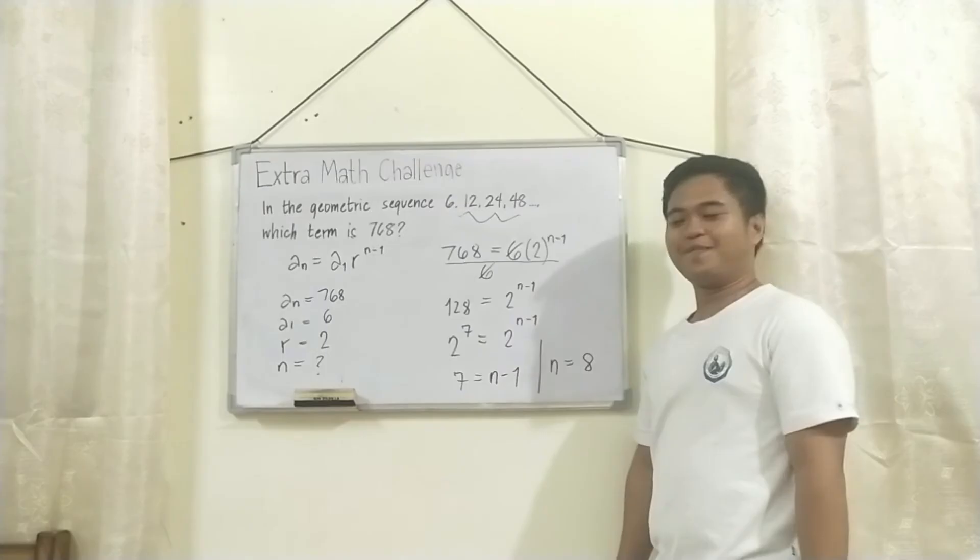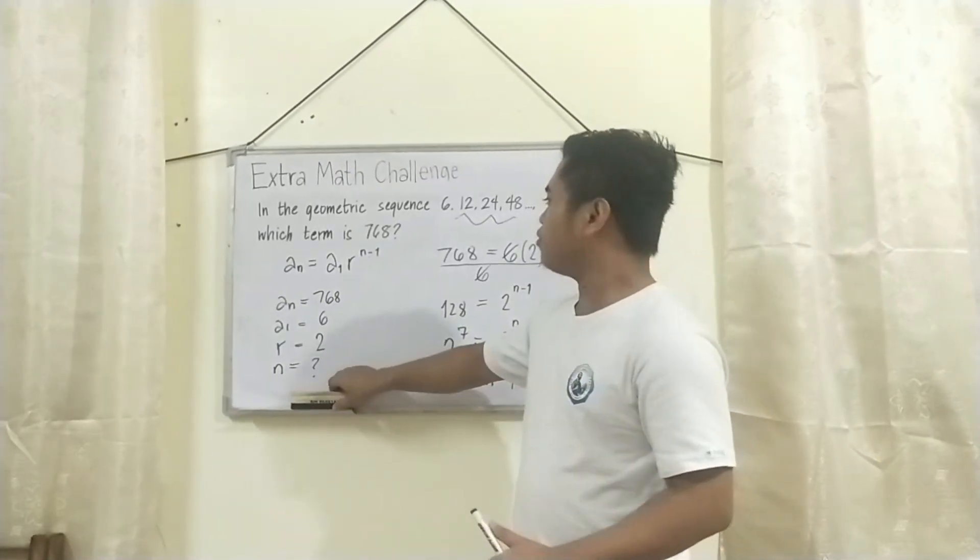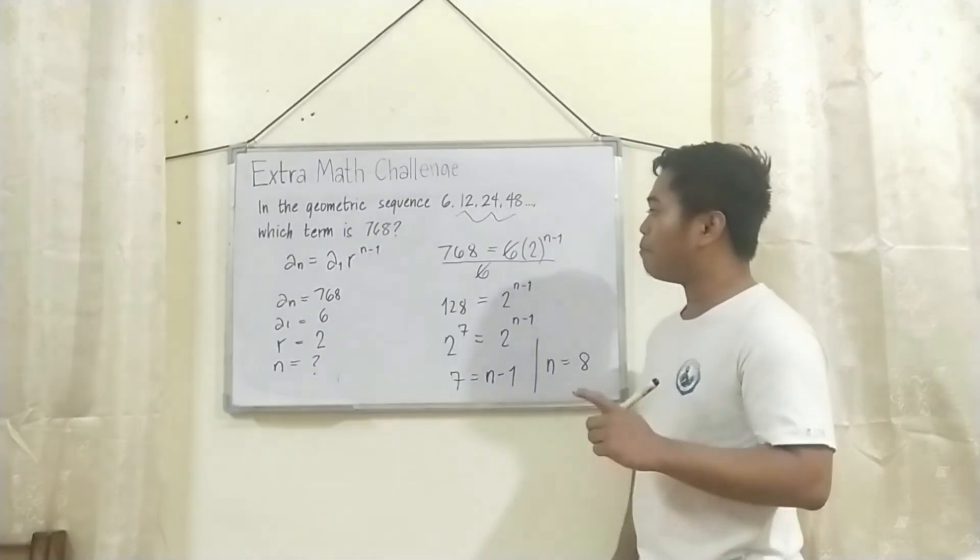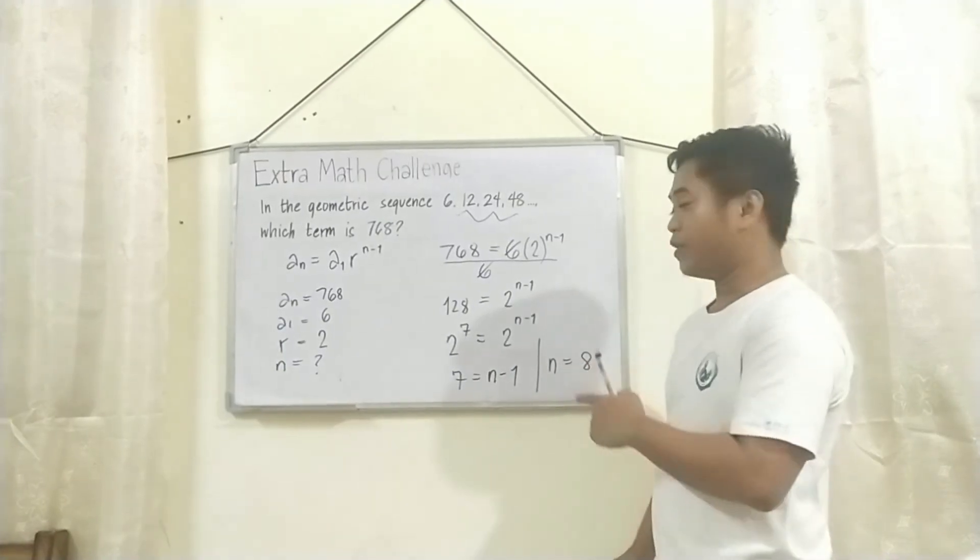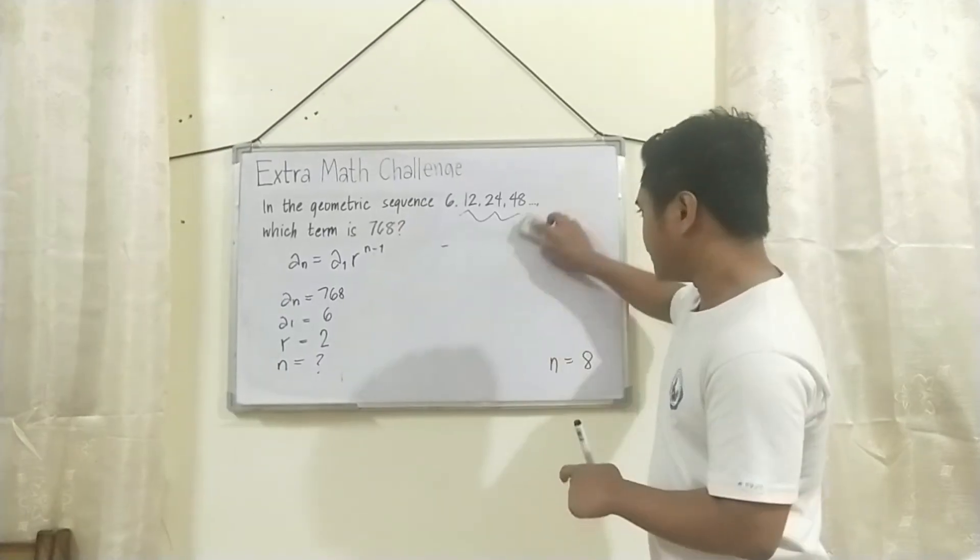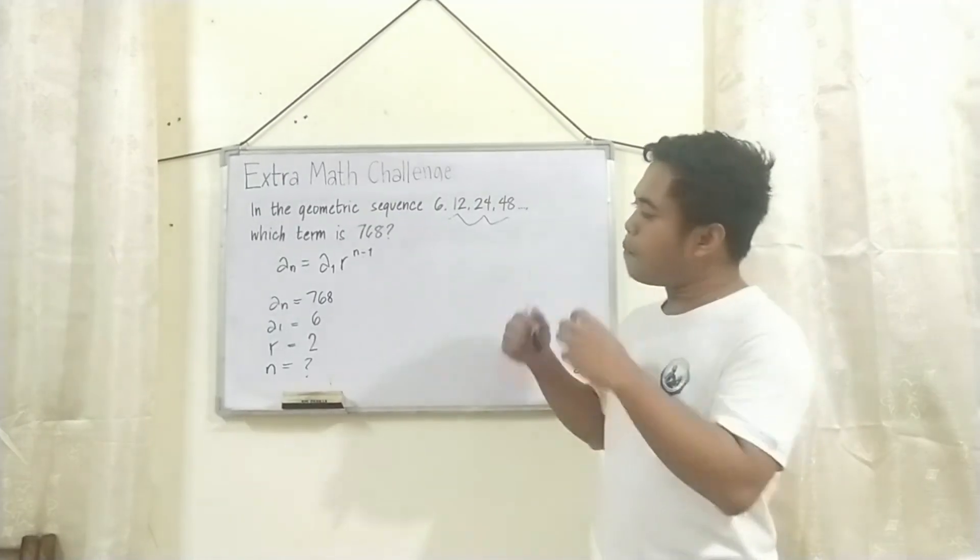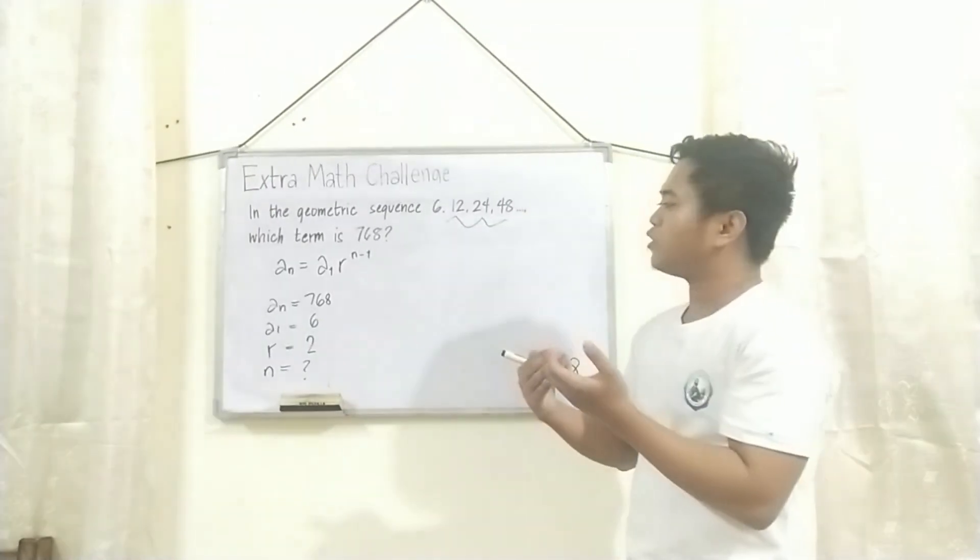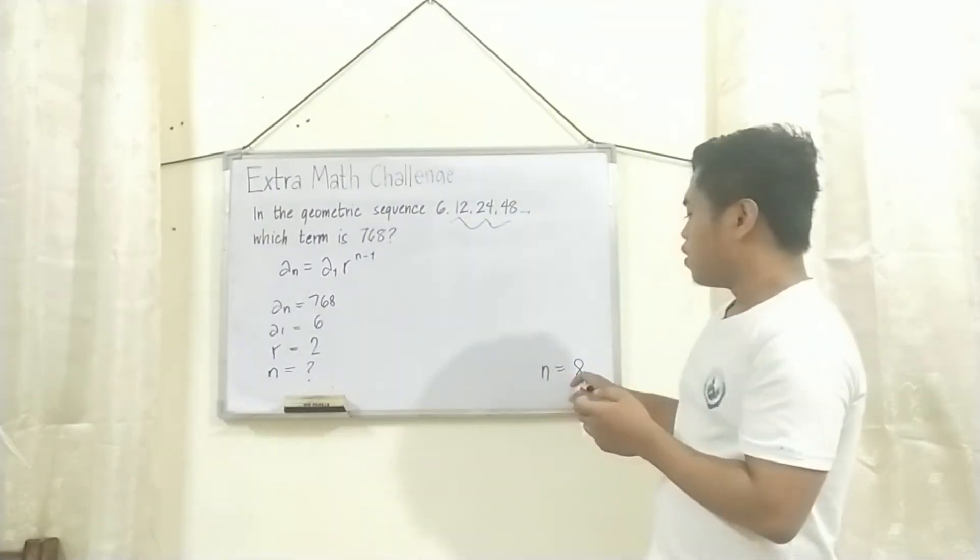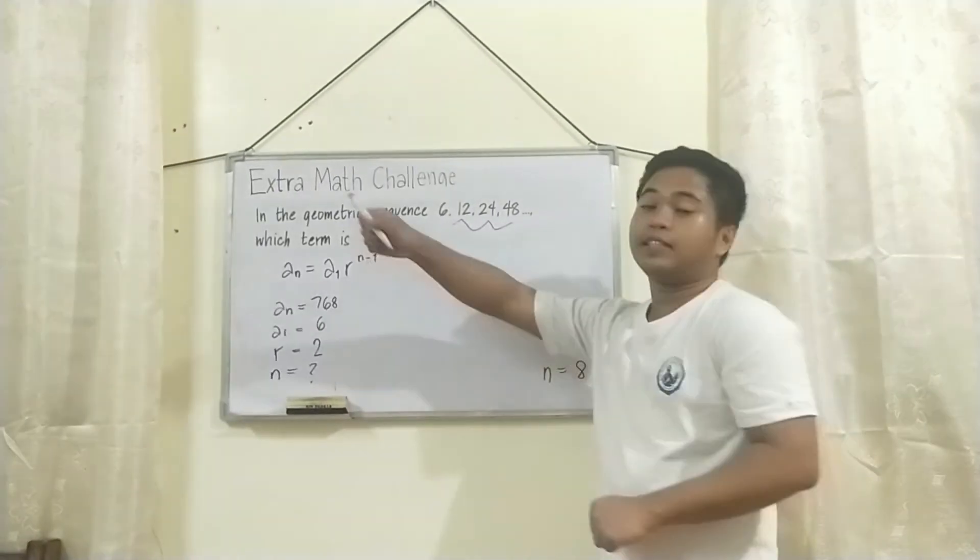Nakuha natin na yung value ng n is 8. How about, habiter arc, paano natin malalaman na tama yung value ng n? I-check natin. Madali lang yan. Balik tayo dito sa formula. Tingnan natin kung mag-e-equate ba or magsasatisfy ba itong equation natin kung gagamitan natin ng 8 as n.